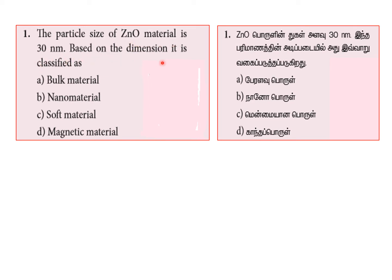Based on the dimension, it is classified as a nanomaterial. The zinc oxide particle of 30 nanometer falls under this classification.